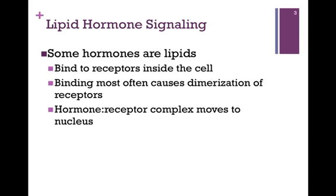Once inside the cell, that's where they bind to their receptors, and the binding most often causes dimerization of the receptors. Then the hormone receptor complex moves to the nucleus. So now we understand why that hormone crossed the membrane first, because its target receptors are on the inside of the cell, and that complex of hormone and receptor has to move inside the nucleus to exert its effects there.